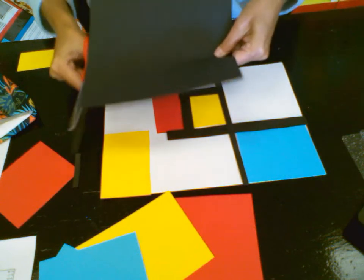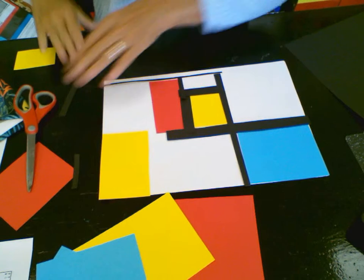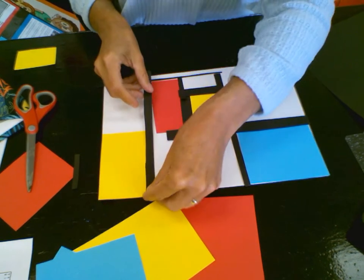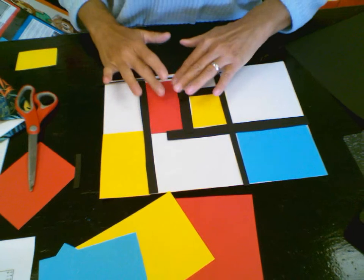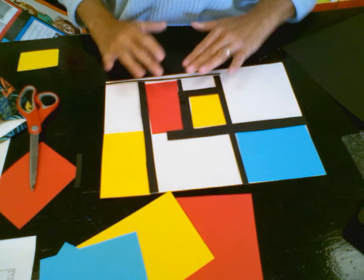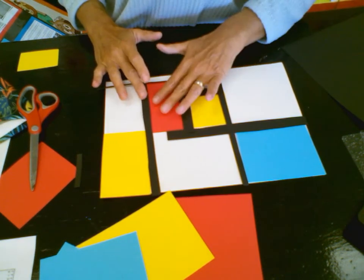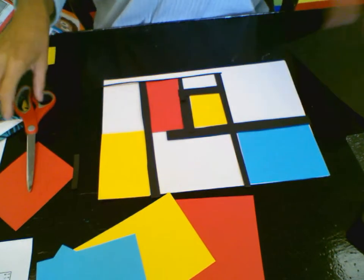You might need to cut some more black strips, but this is another type of abstract artist. An abstract artist just uses lines, shapes, and colors.